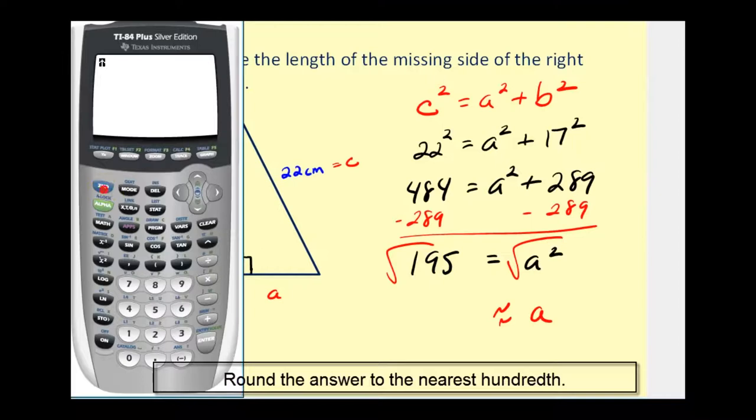So second X squared brings up the square root, 195. It's approximately 13.96, in this case centimeters.